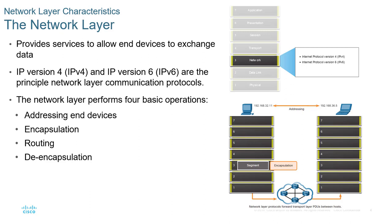Why IPv4 and IPv6? What happened to IPv5? IPv5 did not take off — it was a giant flop, so it isn't discussed anymore. There is a version 5 out there, but it doesn't work. So IPv4 and IPv6 are the primary IP versions.